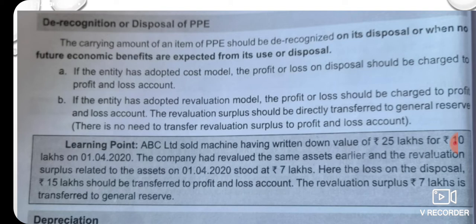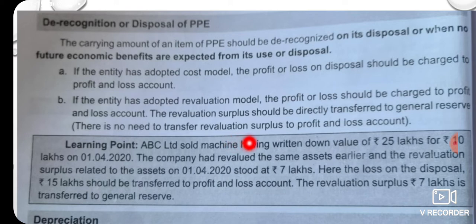If the entity has adopted the Cost Model, the Profit or Loss on Disposal should be charged to the Profit or Loss Account. If the entity has adopted the Revaluation Model, the Profit or Loss should also be charged to the Profit or Loss Account, and the Revaluation Surplus should be directly transferred to General Reserve.